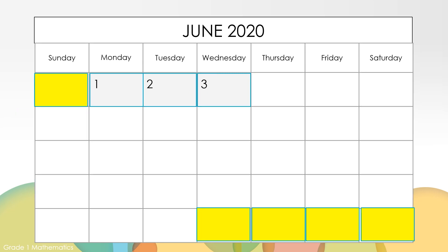Here is our calendar. This row is the days of the week. Let's say those together: Sunday, Monday, Tuesday, Wednesday, Thursday, Friday, Saturday.